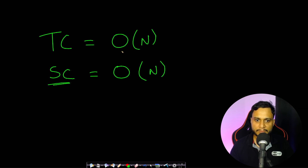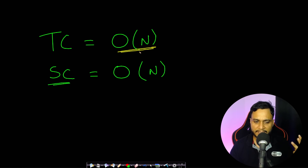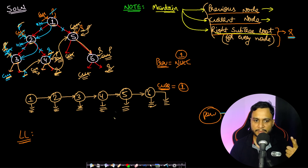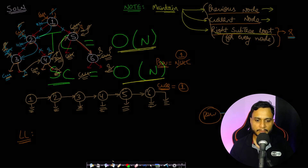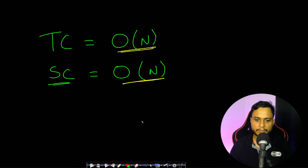The time complexity is O(n) since we reach each node at most three times. The space complexity is O(n) because we use recursion and the tree can be a skewed tree, leading to O(n) stack depth.